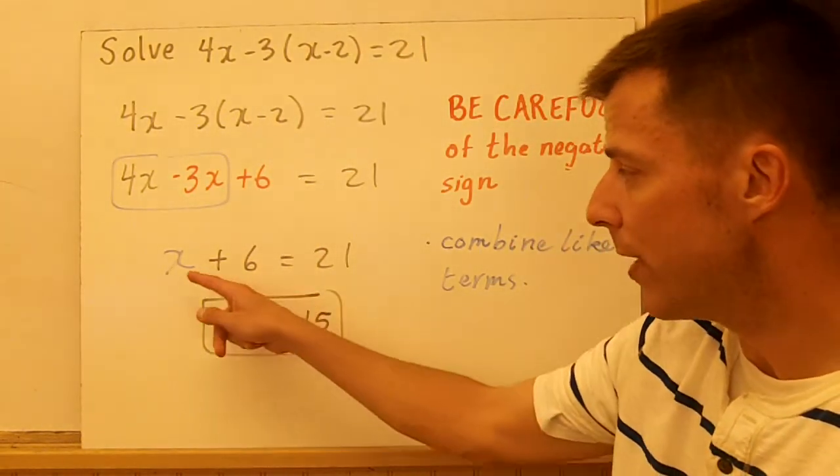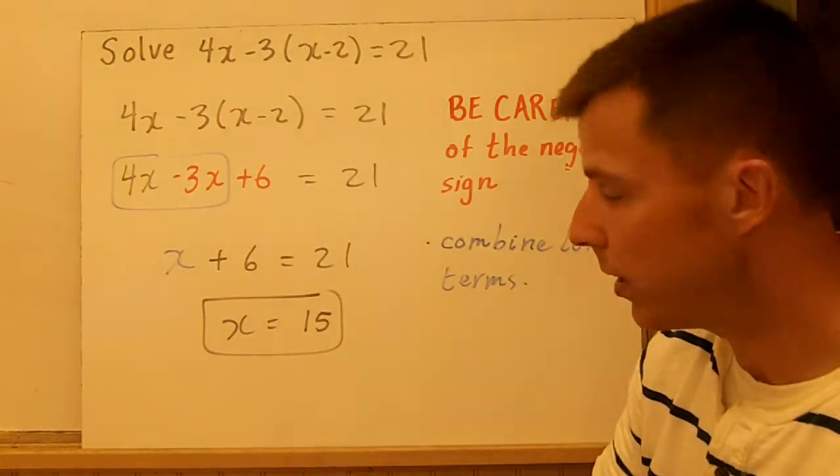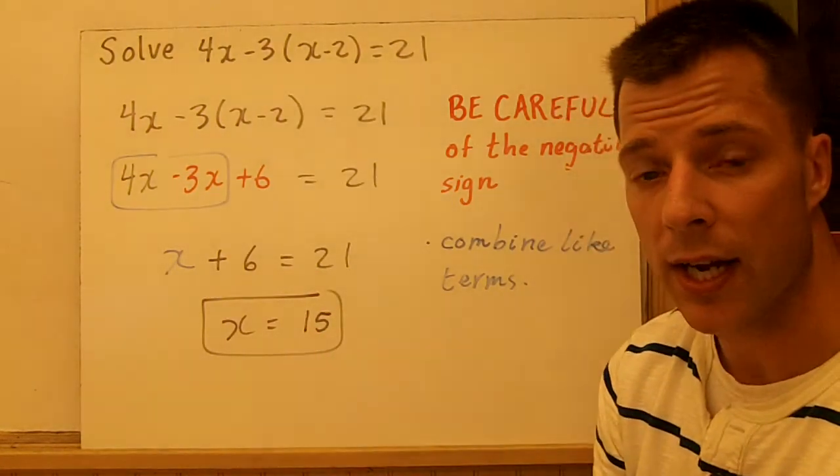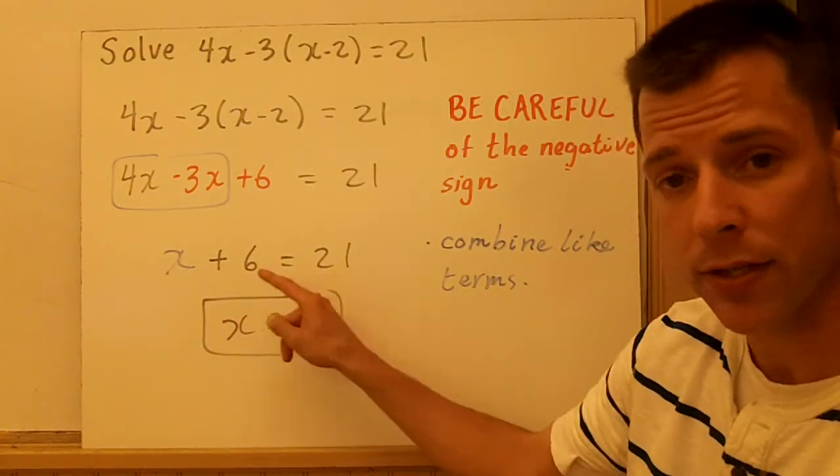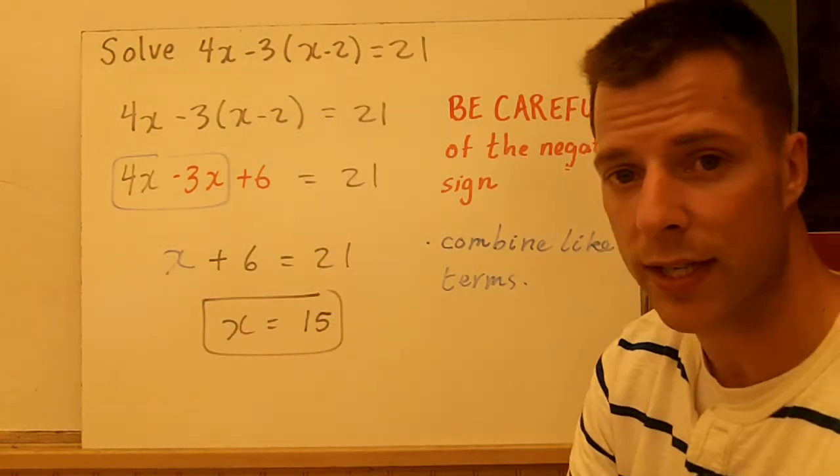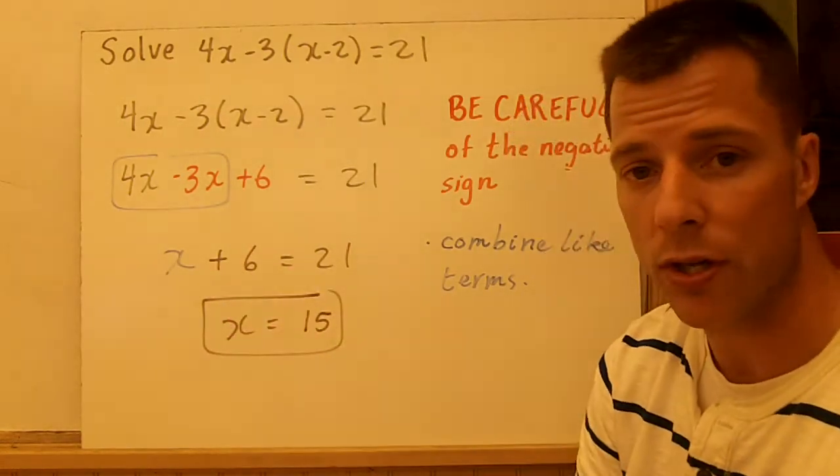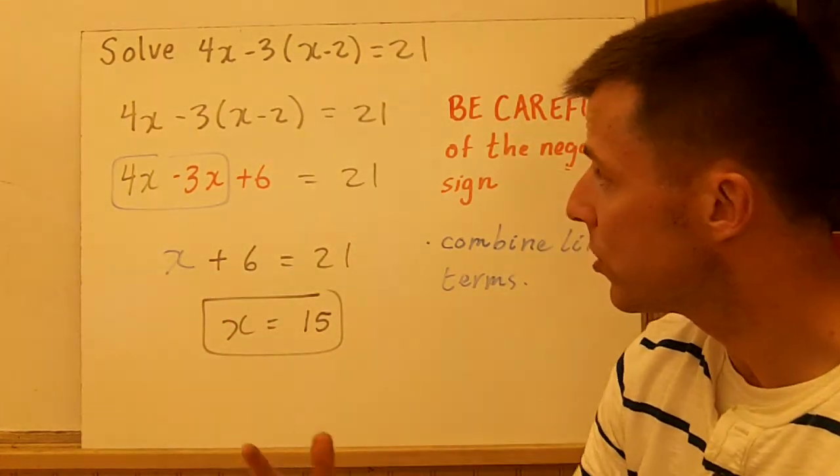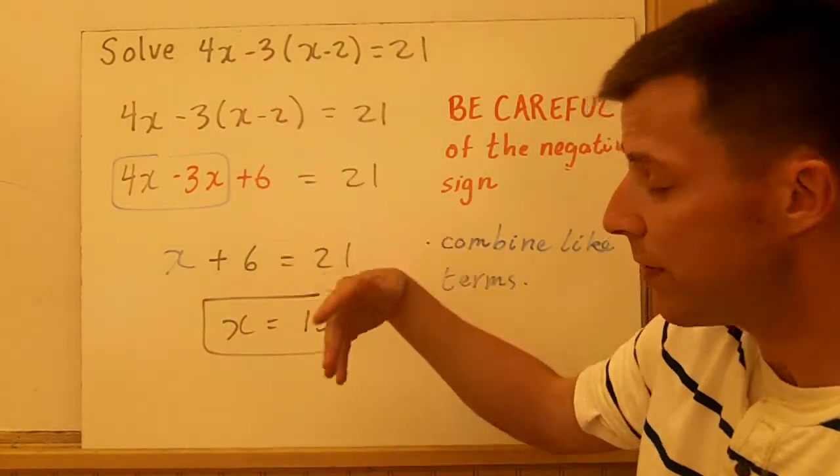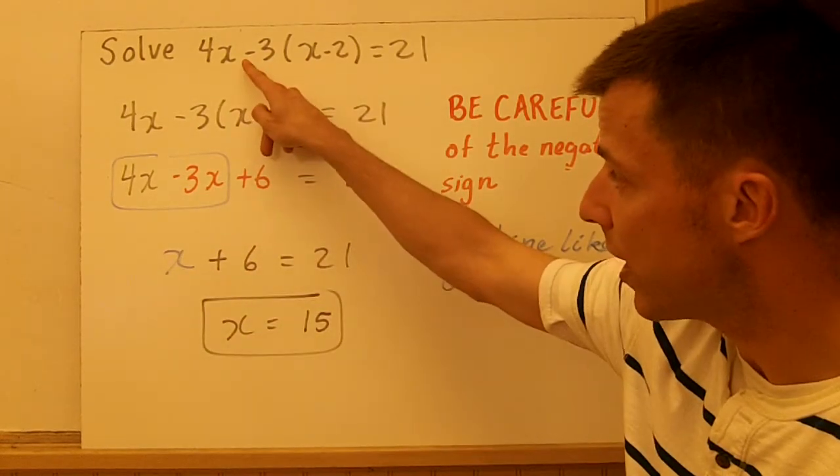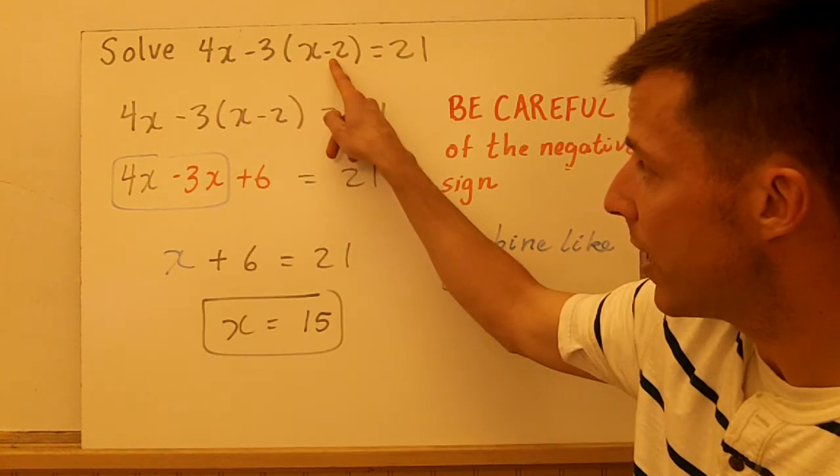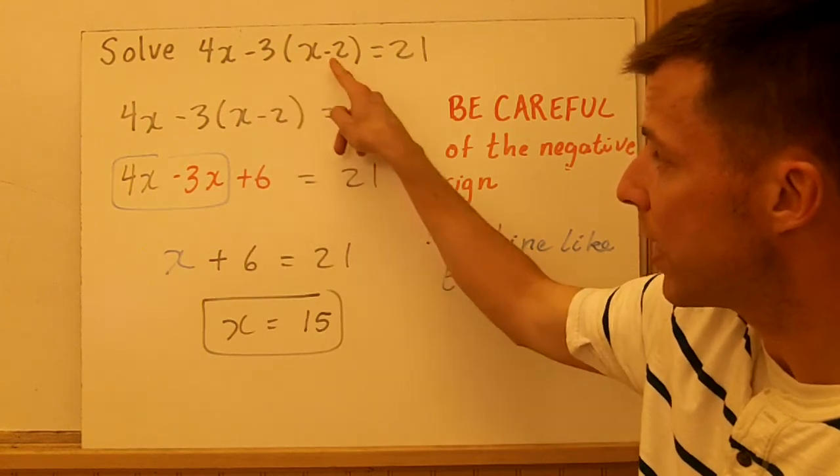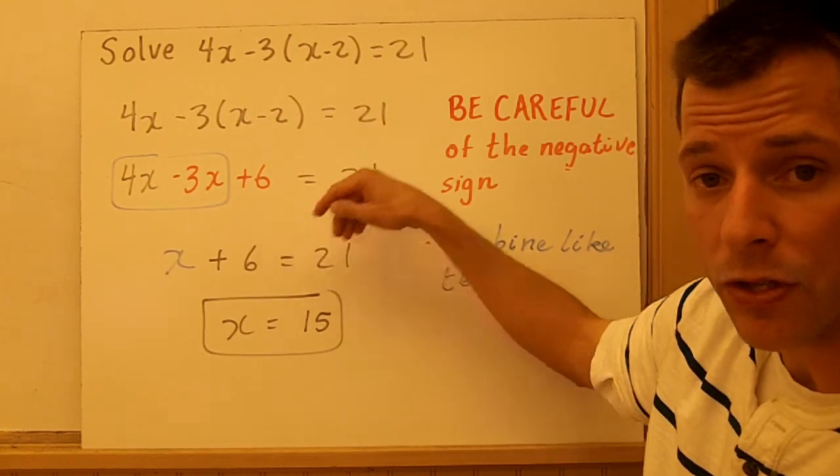Now mental math: what number plus 6 is 21? The answer is 15. You can leave it like that or algebraically subtract 6 from both sides. If you can do mental math, go ahead and do that. That's how we distribute with the negative. Just be very careful when you see that subtraction. It's going to change the sign here. Minus 3 times minus 2 is 6. Just be aware of that.